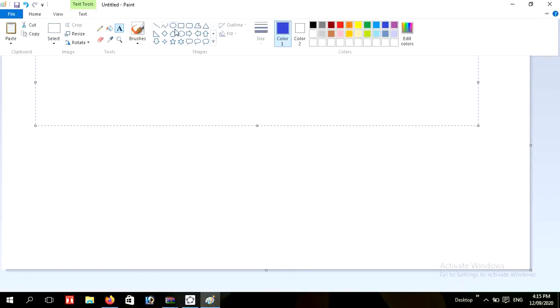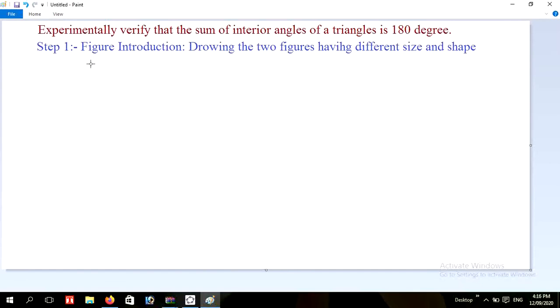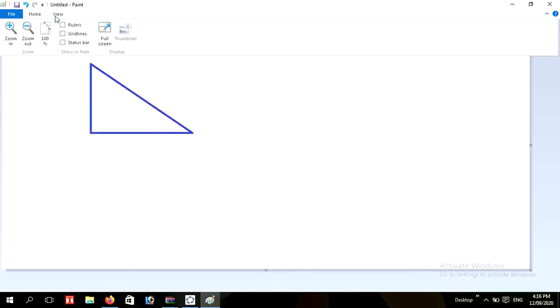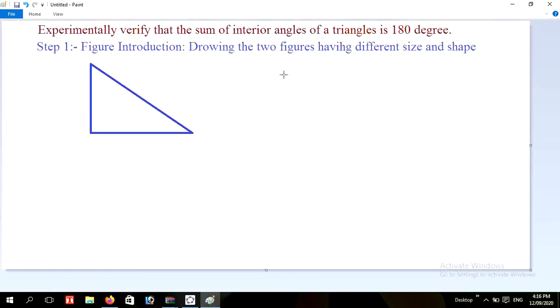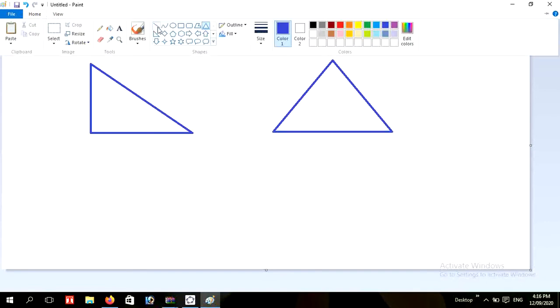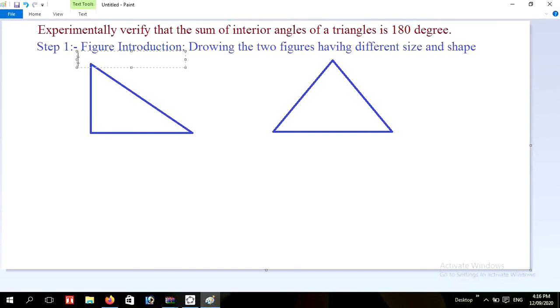Draw two figures, one and another, and then name the given triangles or draw constructed triangles ABC. And write here figure one and this is figure two. And step two.